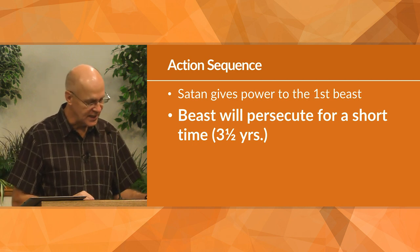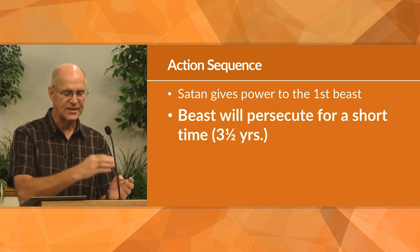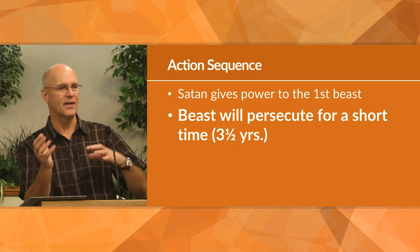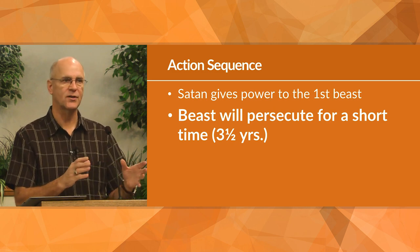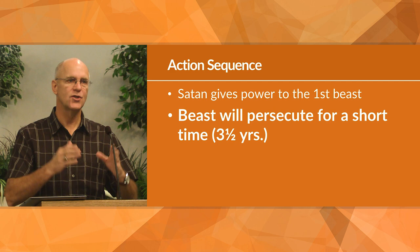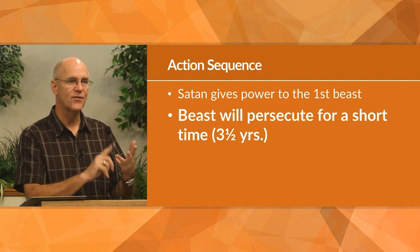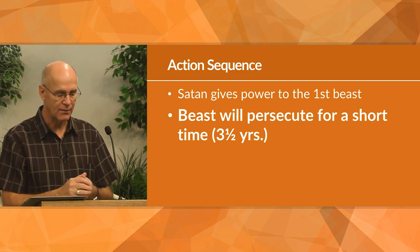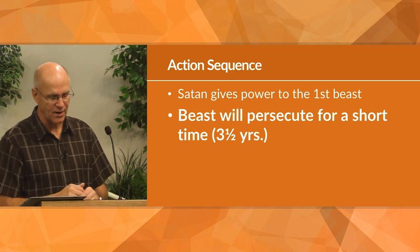So we go to chapter 14. In chapter 14 is the announcement of the final judgment, divided into three sections: the 144,000, the three angels, and the two sickles — that very ancient device to harvest. We've seen the action of Satan's attack. We've seen his forces. Now the judgment on him will be pronounced. We see God's counterattack. Let's read chapter 14, verses 1 to 5.